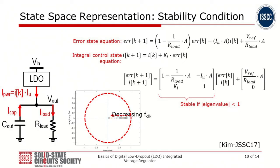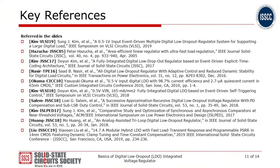In the tutorial, we will also walk through the equations for analyzing the stability of the feedback system. We will particularly focus on the methodology called state space representation, which involves creating matrix forms of equations and finding whether the matrix eigenvalue is less than 1 to ensure the system is stable. We also include a number of references — some selected references are shown here, and given the huge popularity of recent research work, there are more than 100 references listed in the full tutorial.